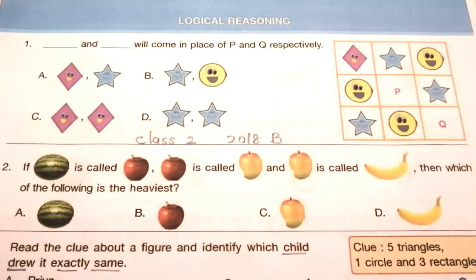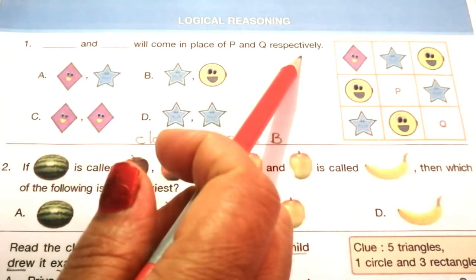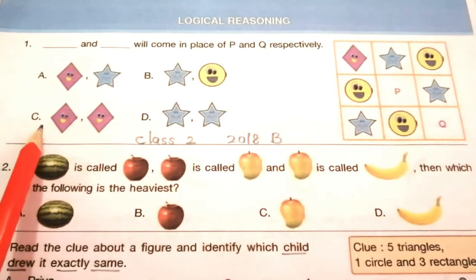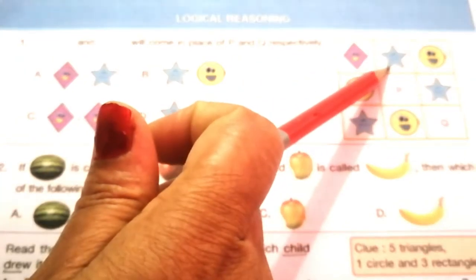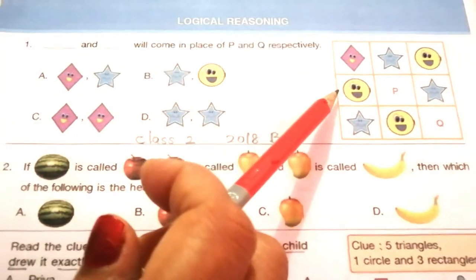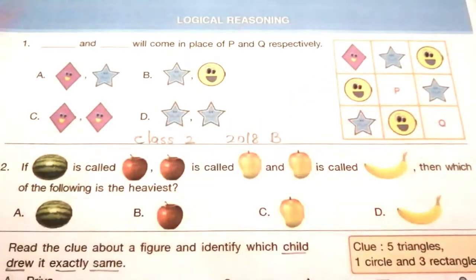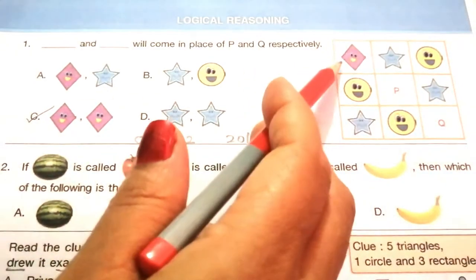Today's first topic is logical reasoning. Question 1: Diamond and star will come in place of P and Q respectively. Look at the given picture and read the options carefully. The first row has one diamond, one star, and one smiley. In the second row, diamond shape is missing, and in the third row, diamond shape is also missing. So the answer is C - P and Q are diamond shapes.